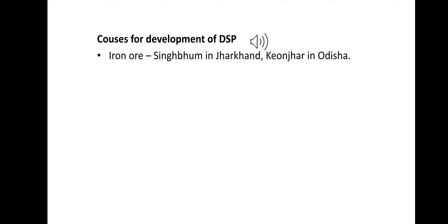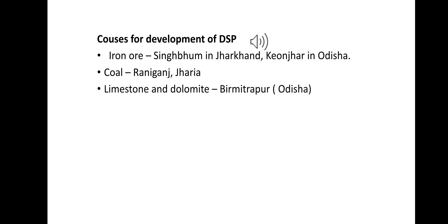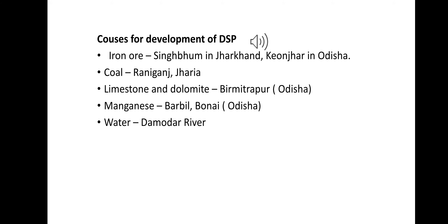Causes for development of DSP — Durgapur Steel Plant: first, iron ore is obtained from Singhbhum in Jharkhand and Keonjhar district in Odisha. Second, high-grade coking coal comes from Raniganj and Jharia. Third, limestone and dolomite are brought from Birmitrapur, and manganese from Babu and Bonai in the northern part of Odisha.